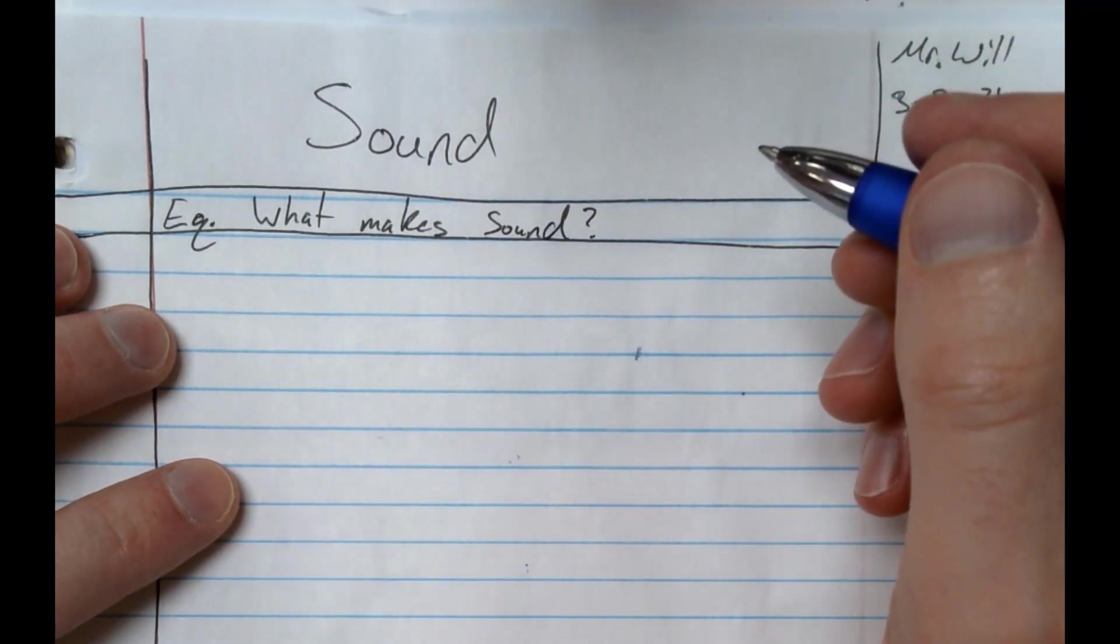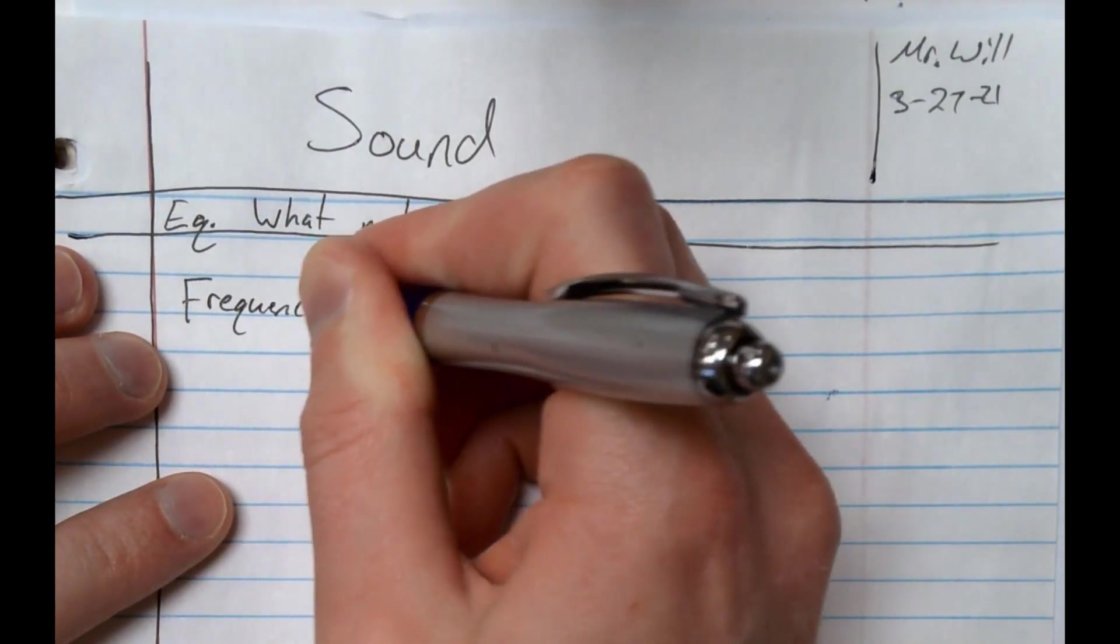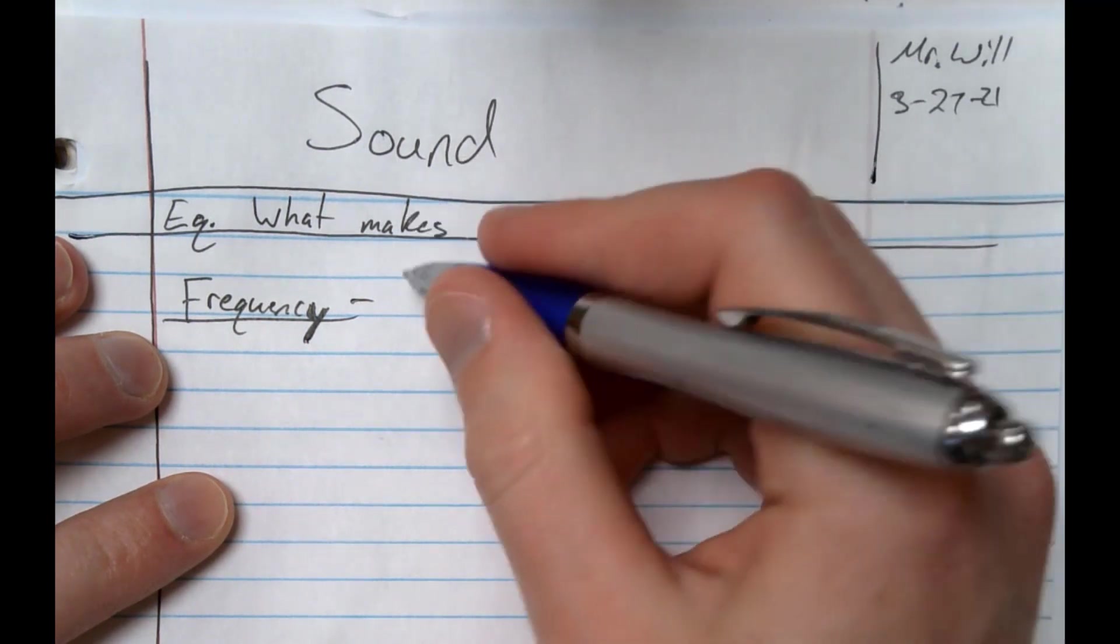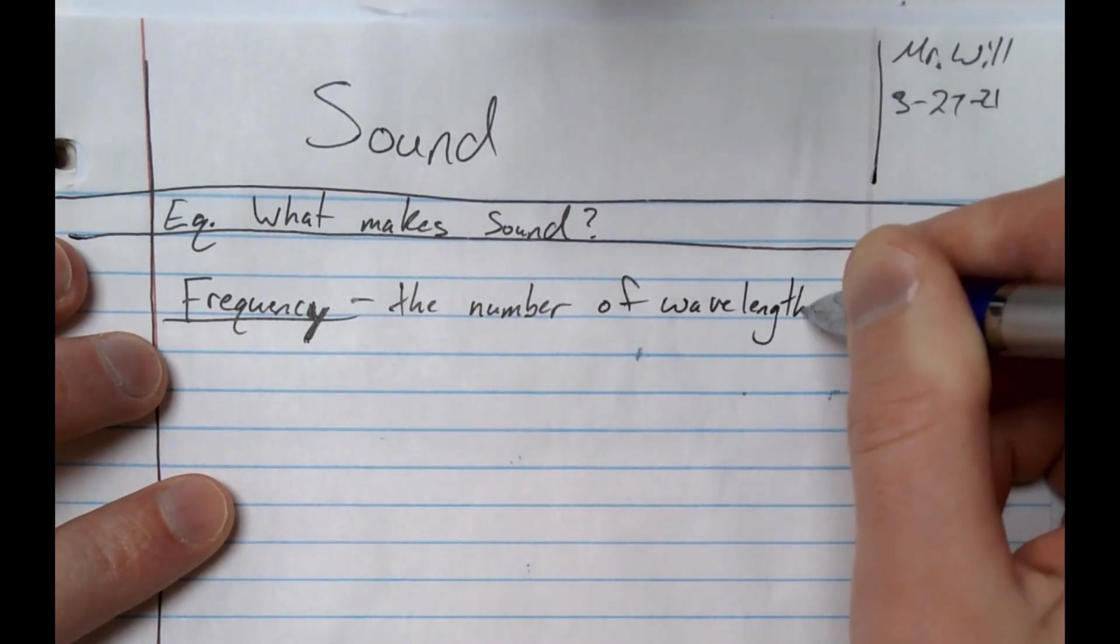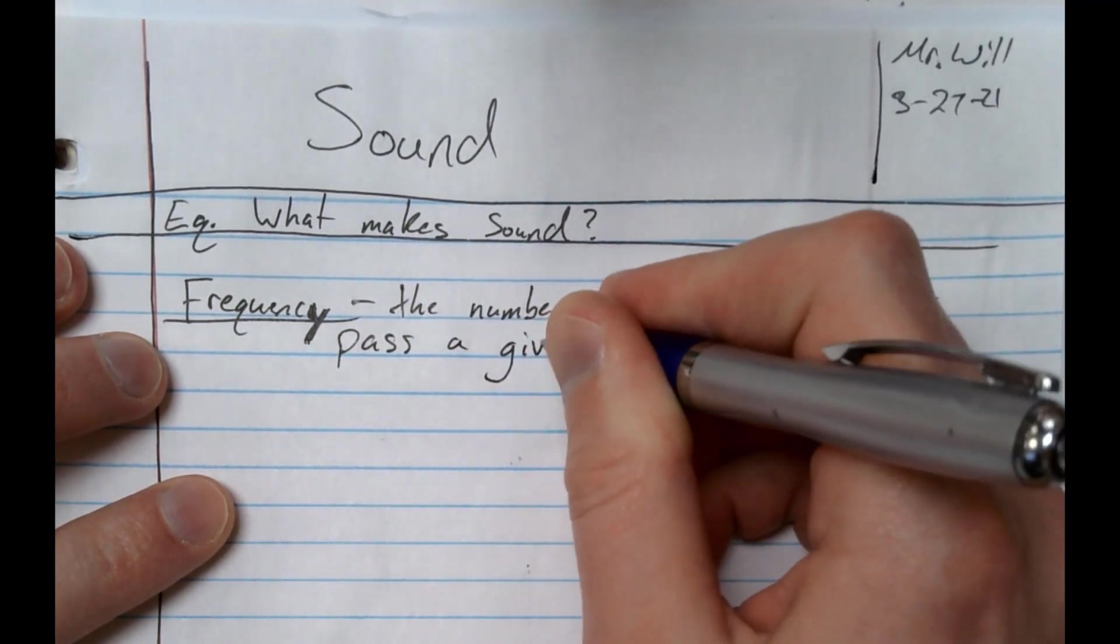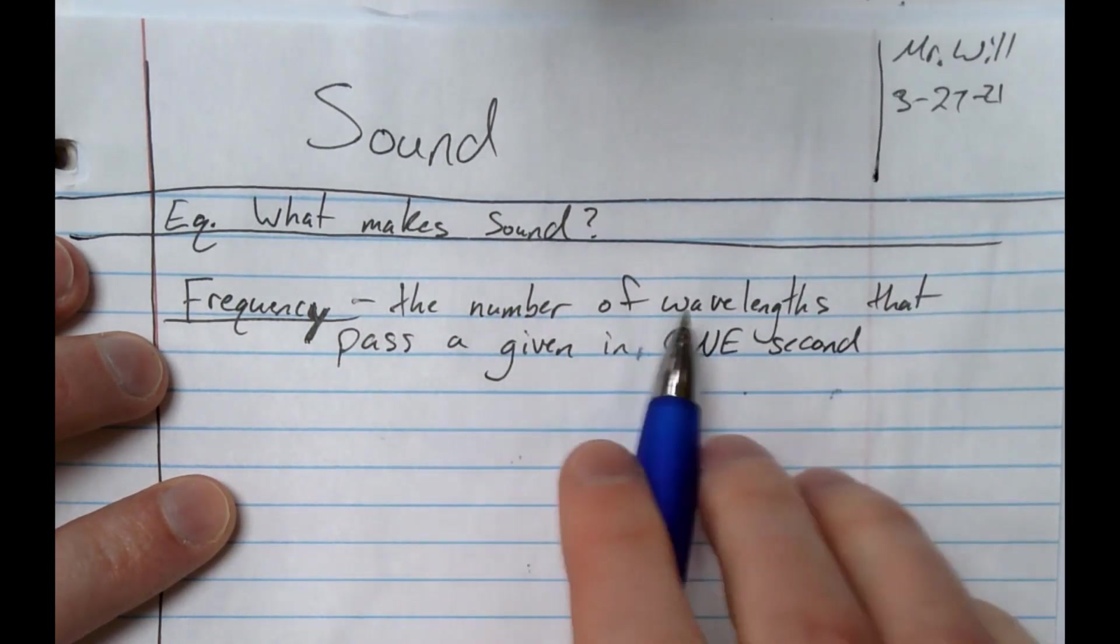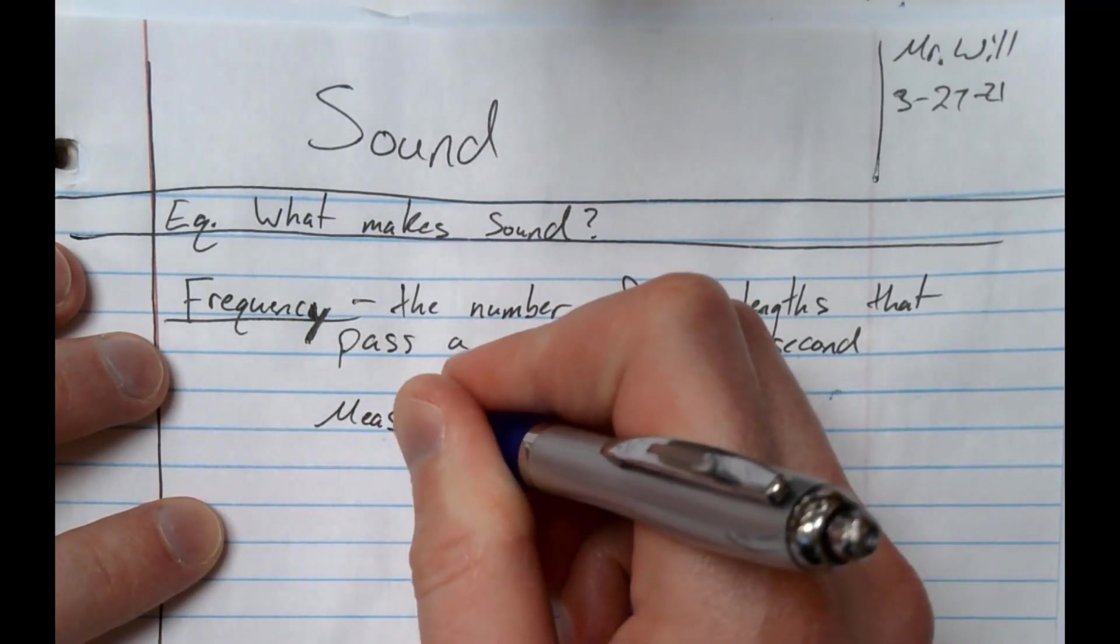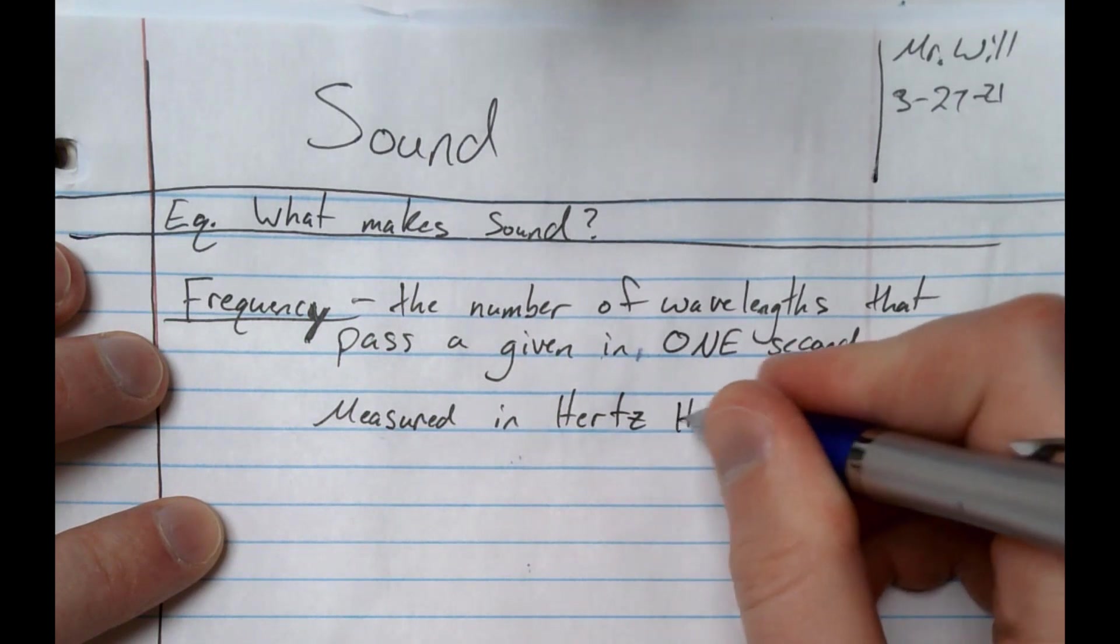Question mark. Alright, so certain things make up sound. And the first one we're going to talk about is frequency. So frequency is our first word. Okay, so frequency is the number of wavelengths that pass a given point in one second. So we're going to measure this in hertz, and we can abbreviate that with an Hz.